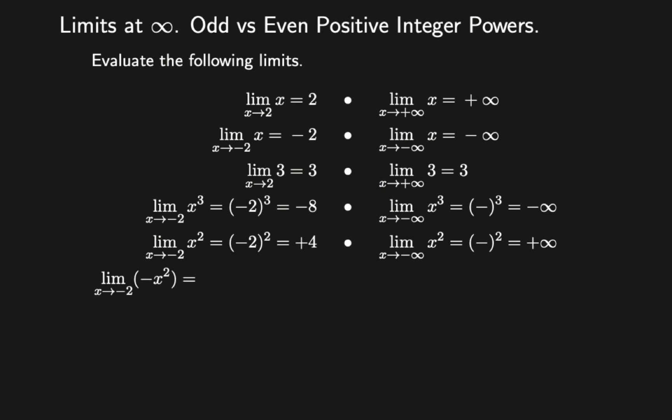Find the limit of minus x squared as x approaches minus 2. You have a negative sign before x squared. For x squared, solve step by step: substitute minus 2, you get 4. Then add the negative sign — you get negative 4.